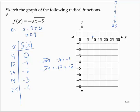So let's go with these points: (9, 0), (10, −1), (13, −2), (18, −3), (25, −4). We see the general shape of a square root radical, and connecting the points with a smooth curve, it continues on to the right.